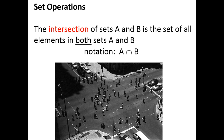The first operation we're going to talk about is something called intersection. If we have two sets and we want to combine them through intersection, we're going to create a set that contains the elements that are in both sets at the same time. The notation is A ∩ B, pronounced 'A intersect B.' Think about where two streets cross — that's the intersection. So an element in the intersection of two sets has to be contained in both sets at the same time.